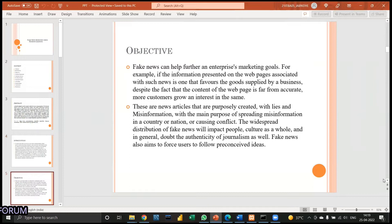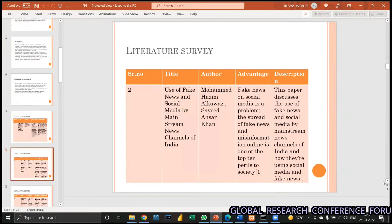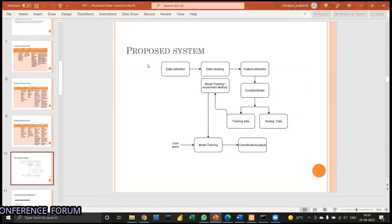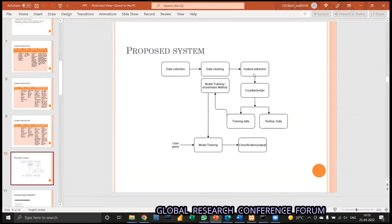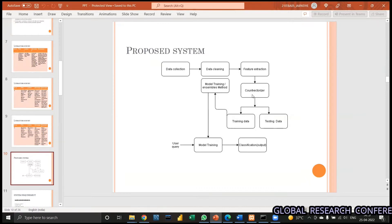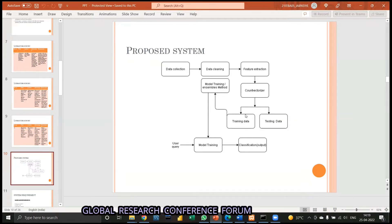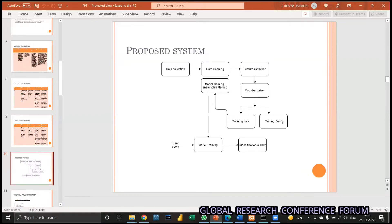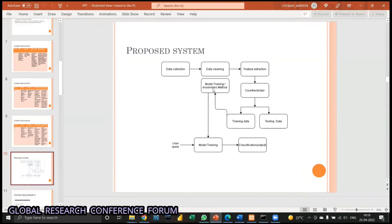That is of benefit to both the customers and the consumers. The main system of how it works is like this: We collect the data first, clean the data, extract the relevant features. Then count vectorizer comes in place, wherein we count the frequency of each word that is occurring in the dataset. Then we divide the dataset in two parts, training data and test data. Training data we use to train our model, test data we use to test our model's accuracy and efficiency. Then this training data, we apply model training and ensemble methods.